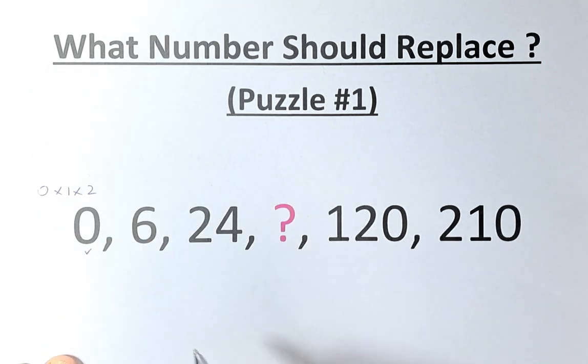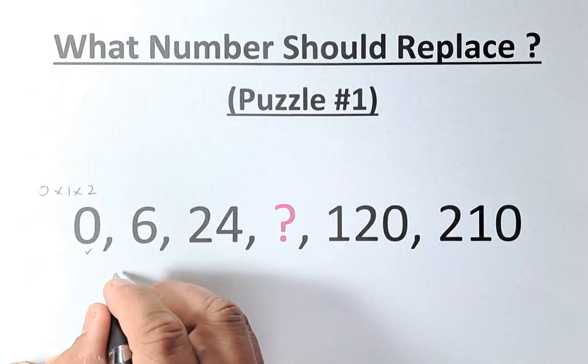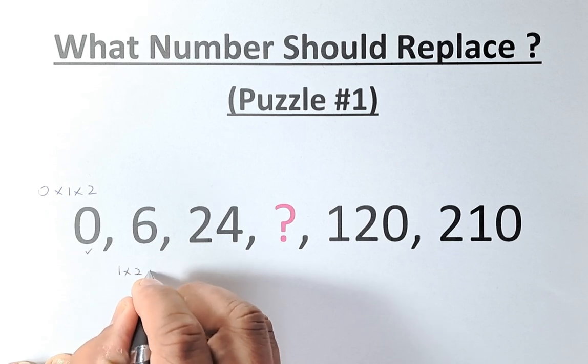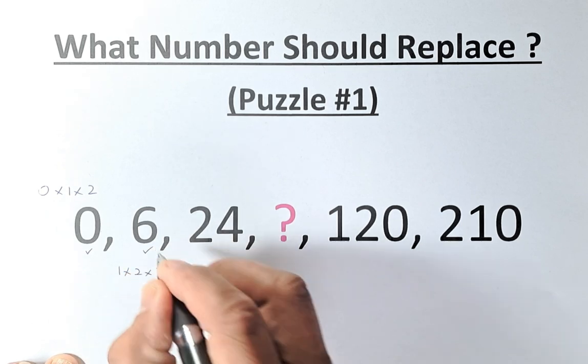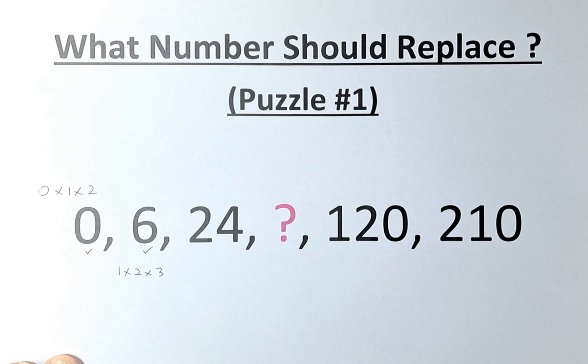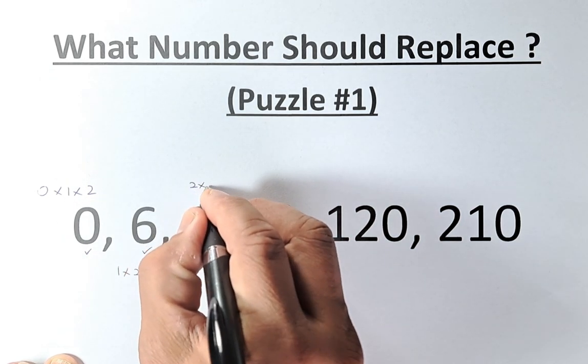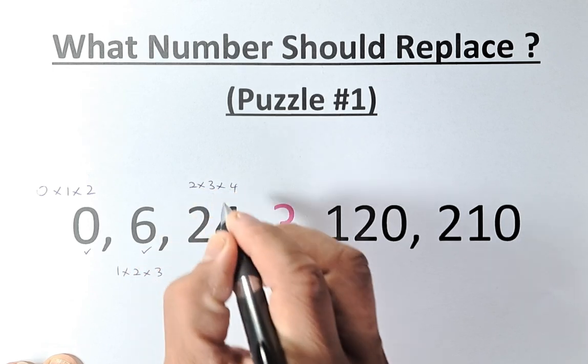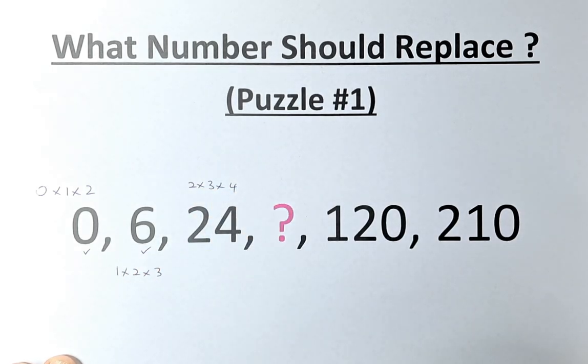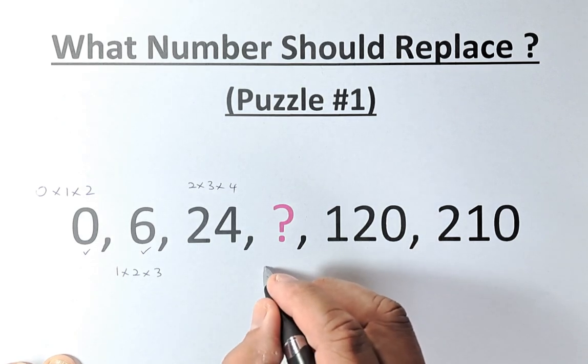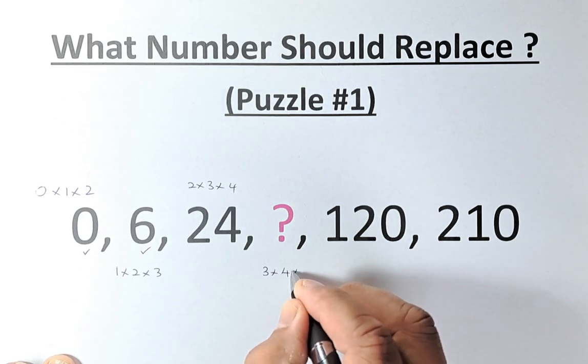To get 6, we're going to do the next number, which is going to be 1 multiplied by 2 multiplied by 3, and that will give us 6. So you have an idea of what's going on. The next number, 24, is going to be 2 multiplied by 3 by 4. 2 times 3 is 6. 6 times 4 is 24.